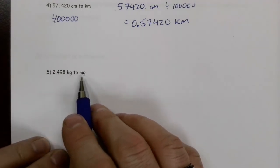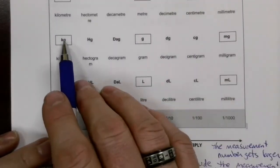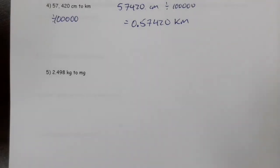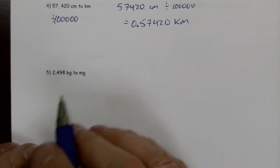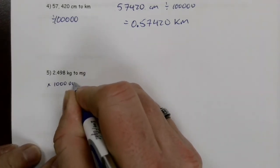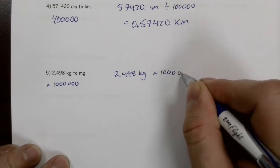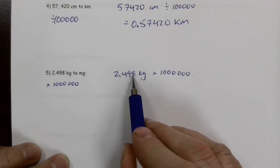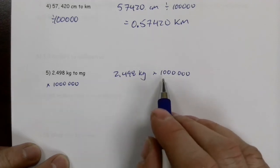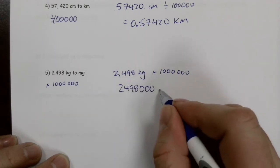Finally: 2.498 kilograms to milligrams. From kilogram to milligram is six steps — so we multiply or divide by 1,000,000. Since we're going from a large unit to a small unit, the number gets bigger, so we multiply by 1,000,000. Starting with 2.498, moving the decimal six places to the right gives us 2,498,000 milligrams.